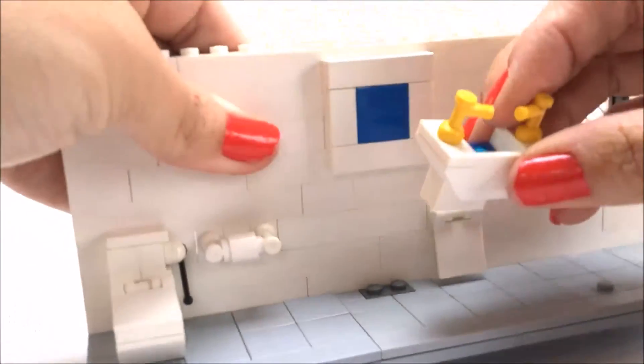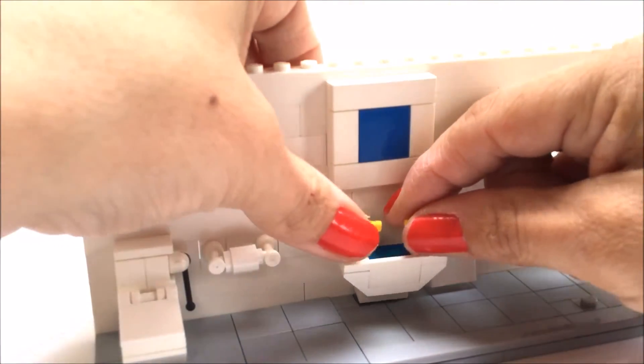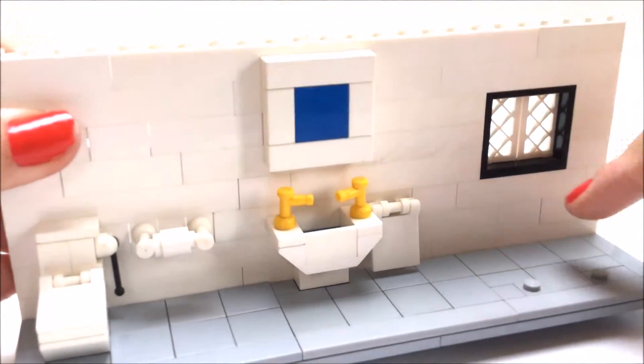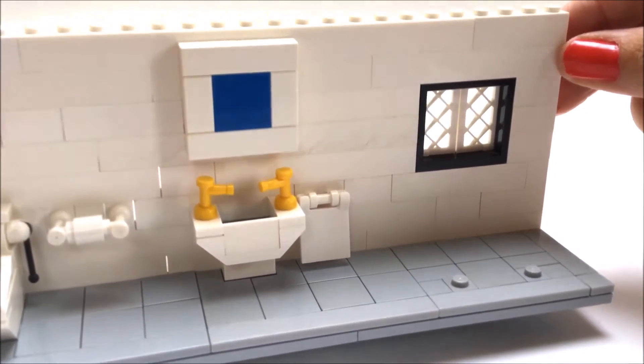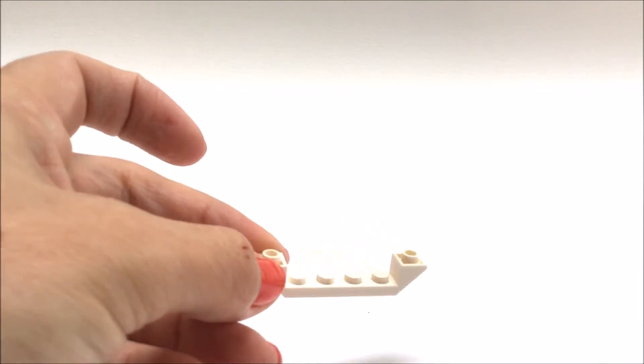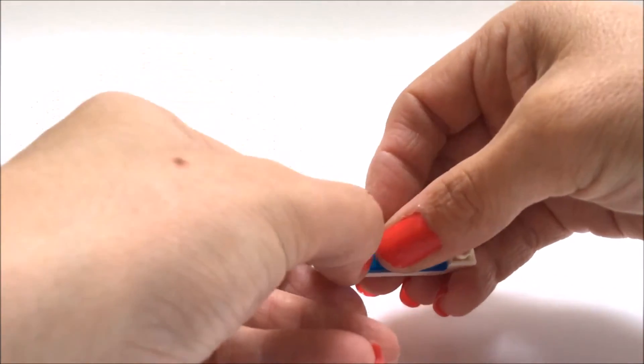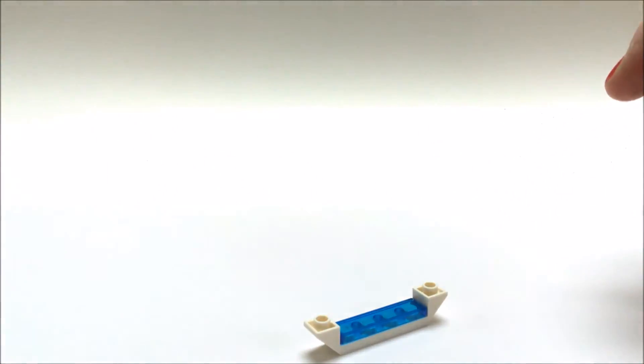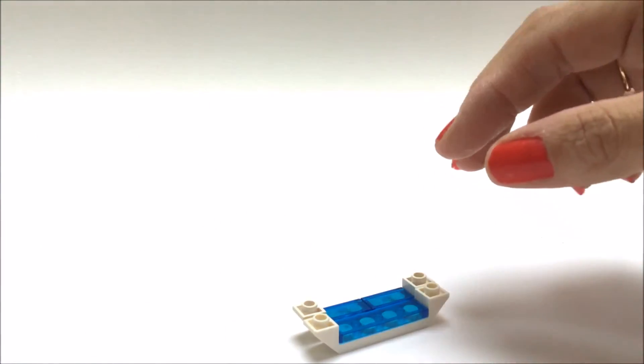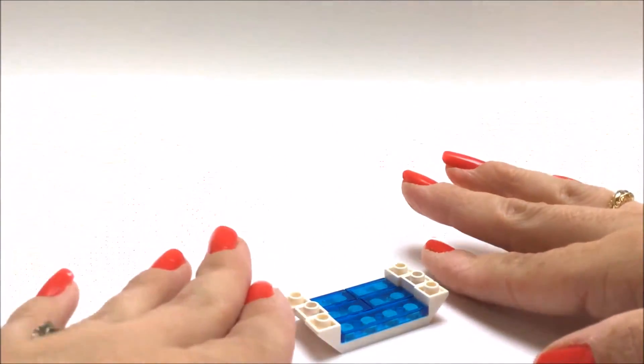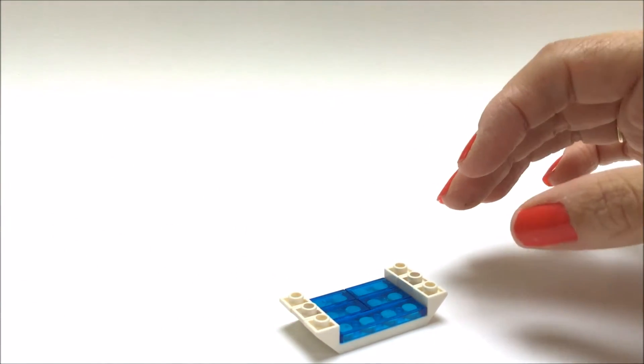Okay now for the roll top bath, for our bath we're going to use these bricks which are often found on Lego vehicle chassis and we're going to add some more transparent blue tiles. We're going to add three tiles like so creating the main area of the bathtub, the blue tiles giving the impression of water.